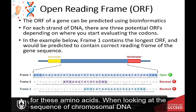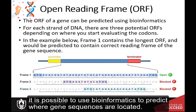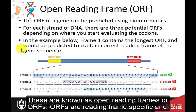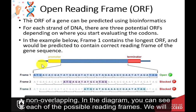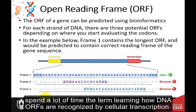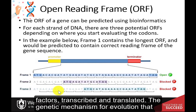When looking at the sequence of chromosomal DNA, it is possible to use bioinformatics to predict where gene sequences are located. These are known as open reading frames, or ORFs. ORFs are reading frame-specific and non-overlapping. In the diagram, you can see each of the possible reading frames. We will spend a lot of time this term learning how DNA ORFs are recognized by cellular transcription factors, transcribed, and translated.